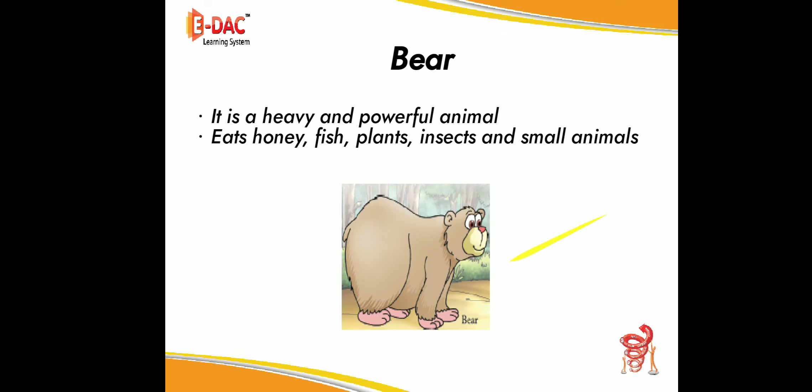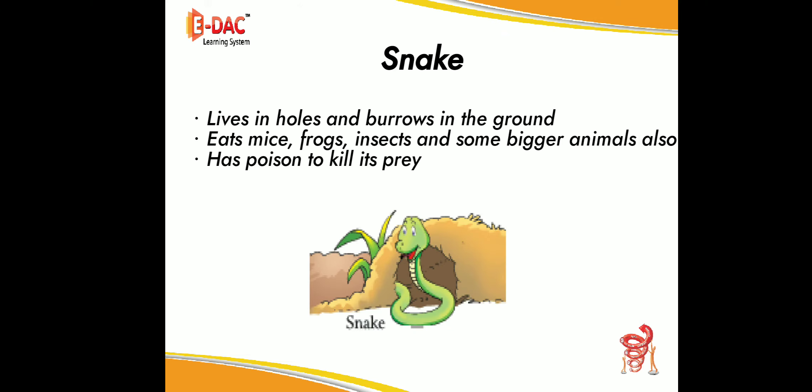See the next example. Look at that picture and tell the name of the animal. Yes, it is a snake. It lives in holes and burrows in the ground. It eats mice, frogs, insects, and some bigger animals. It has poison to kill its prey.